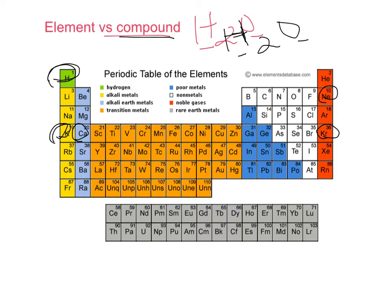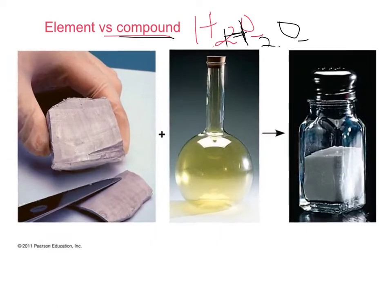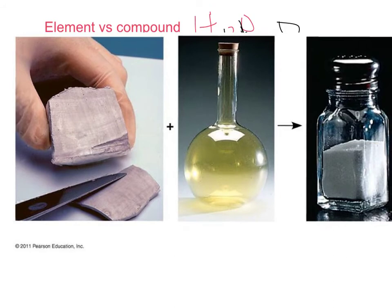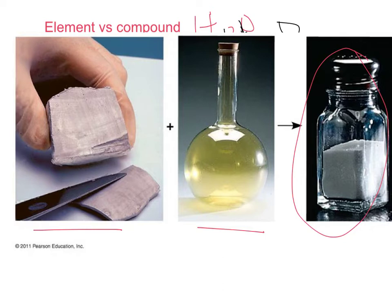Let's look at another compound — table salt, which is sodium chloride. It comes from sodium, a soft metal that will explode when it comes into contact with water, mixed with chlorine, a poisonous gas. When those two come together, they make table salt that we eat and don't think twice about, because the chemical properties of the compound are very different than those of the individual elements.